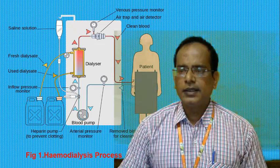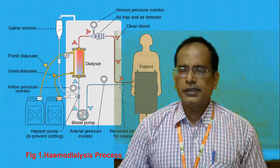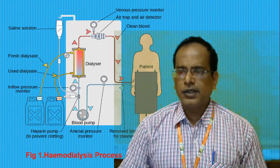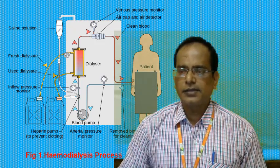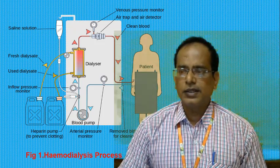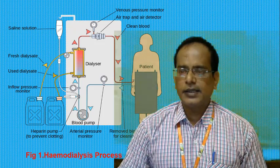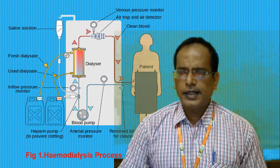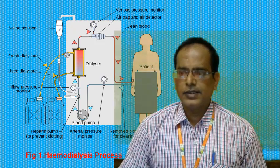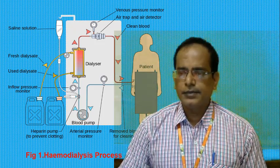The dialyser machine filters blood during the dialysis process. Blood enters the machine from the body under pressure from a radial artery, and is then sent to a roller pump — also called a peristaltic pump — which controls the pressure and flow rate.